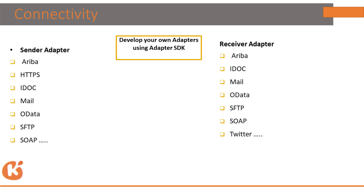In CPI we have different adapters to connect to back-end and front-end systems. Sender adapters include Ariba, HTTP, IDoc, mail adapter for mail services, SFTP for file systems, and more. Receiver adapters also include Ariba, IDoc, mail, SFTP, SOAP, and SuccessFactors Employee Central.